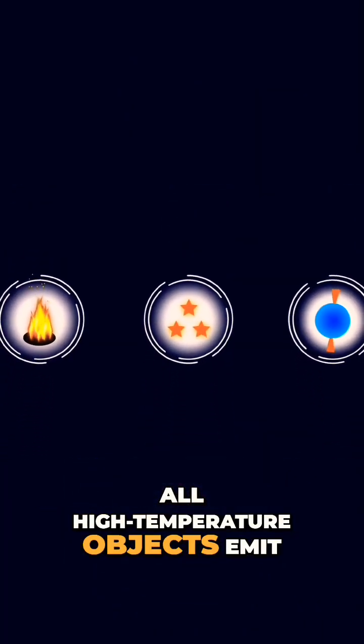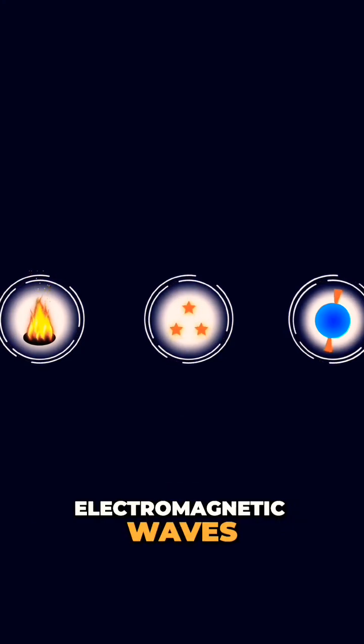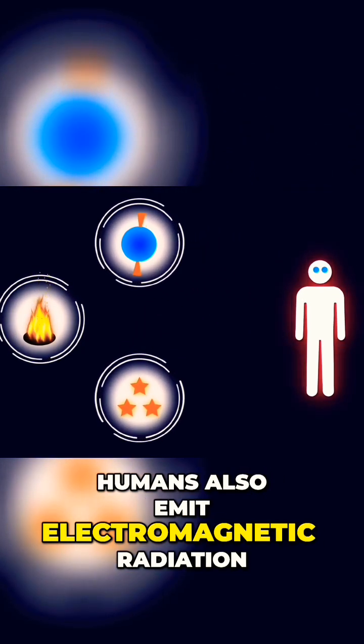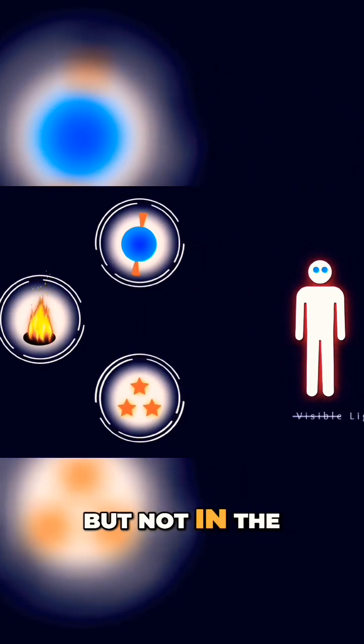electromagnetic radiation. All high temperature objects emit visible light electromagnetic waves. Humans also emit electromagnetic radiation, but not in the visible light range.